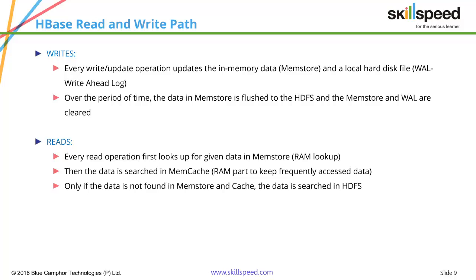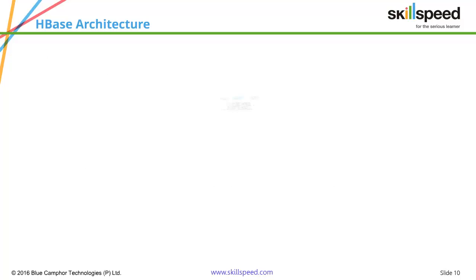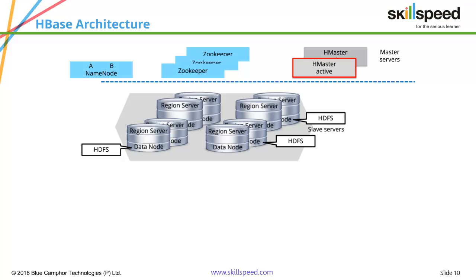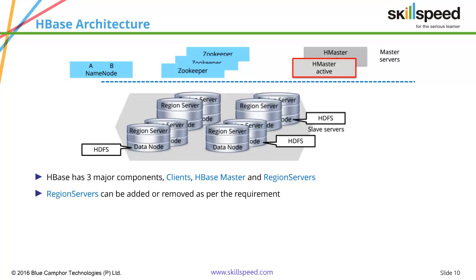This is why HBase is really fast — it tries to keep the most frequently accessed data in the memstore, which is RAM, so it can provide results in near real time. Looking at the HBase architecture, there are three major components: the client, the HMaster (master server), and the region servers. The client is used to access HBase and read or write data. Region servers can be added or removed as per requirement and are typically your data nodes.